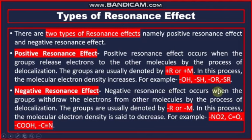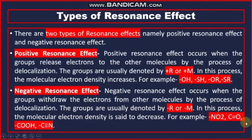Negative resonance effect occurs when the group withdraws the electron density from other molecules by the process of delocalization. The groups are usually denoted by minus R or minus M. In this process, the molecular electron density is decreased. For example, NO2, C double bond O, C double bond O H, and C triple bond N.